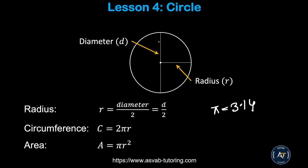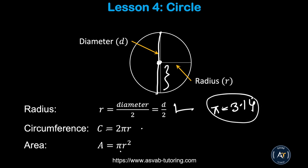Now we'll learn how to find the area and circumference of a circle. The diameter goes from one side to the other through the center; the radius is half the diameter. The formulas are: radius = diameter ÷ 2, circumference = 2πr, and area = πr², where π = 3.14.